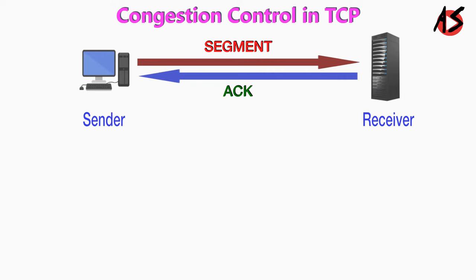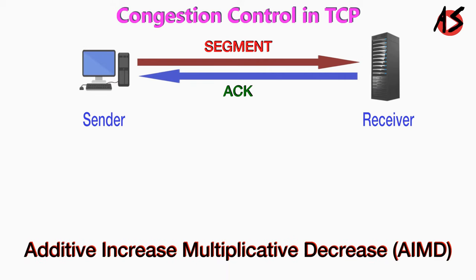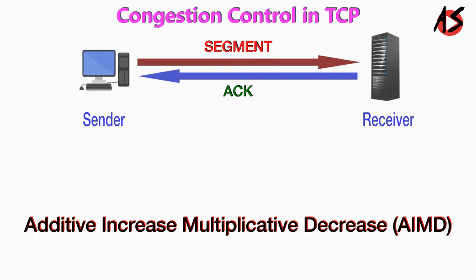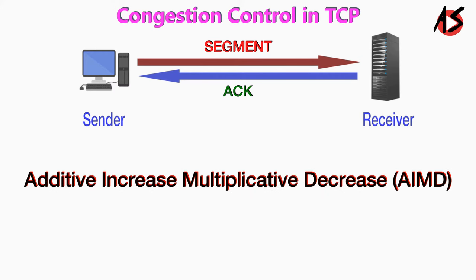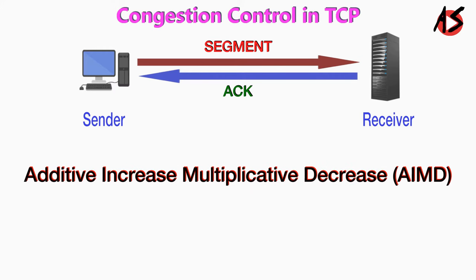To control congestion, TCP uses the additive increase, multiplicative decrease — the AIMD strategy. Let's understand it with an example.